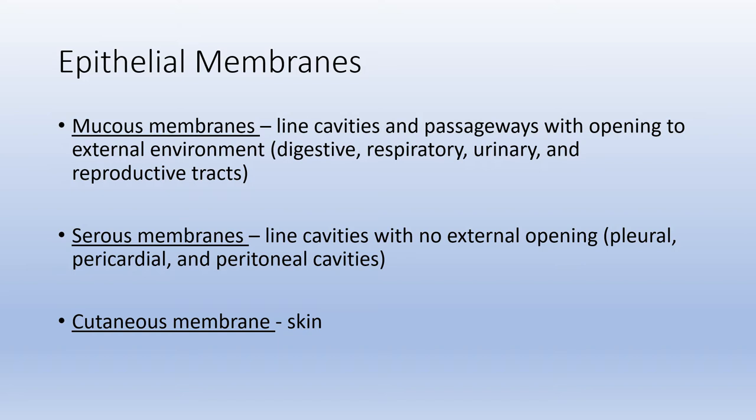Serous membranes line cavities that don't have an opening to the external environment — things like your pleural membranes around the lungs, the pericardial membrane that surrounds the heart, and the peritoneal cavities. The cutaneous membrane is just another name for your skin.